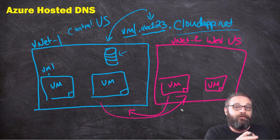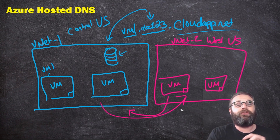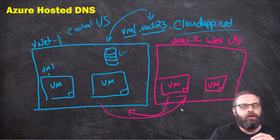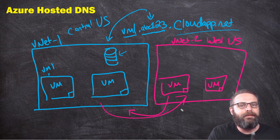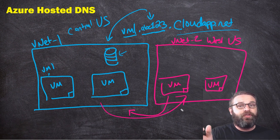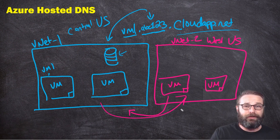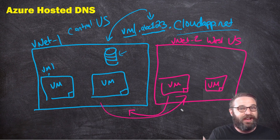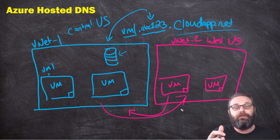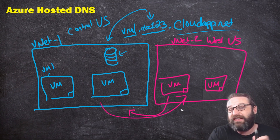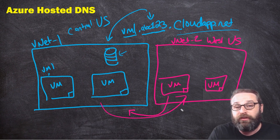VMs can only resolve the VMs that are within the same VNet. That kind of makes sense if you think about it - do you want anybody else out of all the tenants across all of Azure to be able to come along and just perform an NSLOOKUP and find your resources? Probably not. That would be a bad thing - to have that kind of open resource. So in order to make cross-VNet resolution actually work, it takes some extra configurations, and that's outside the scope of this video.